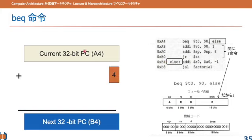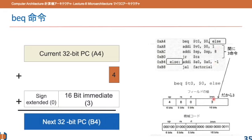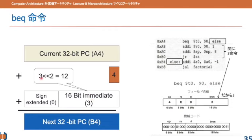Typically the program counter is added by 4, and the immediate part is 3. We need to sign extend this value. Since it is positive, the extended part will be zeros. If it were minus 3, the sign bit would be 1 — it's a two's complement number, so a leading 1 means it's negative. We extend the sign and shift it by two bits, multiplying by 4, then add it to PC plus 4 to get the next program counter.